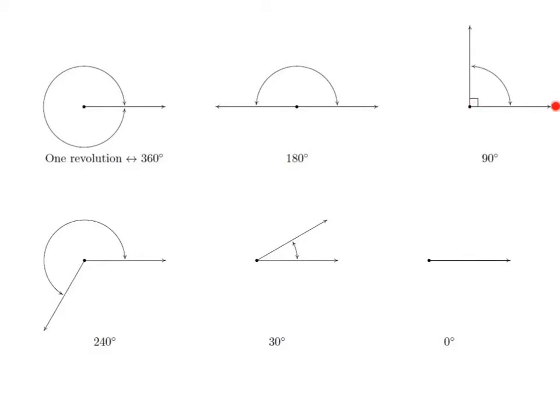Here we have the right angle, that is 90 degrees, and this little square symbol is very common for the 90 degree right angles. Here we have 240 degrees, that's an obtuse angle. Here we have a 30 degree acute angle. And then here, this is a zero degree angle.